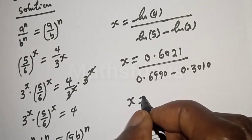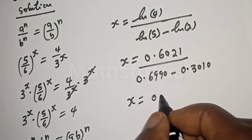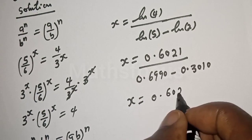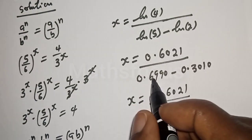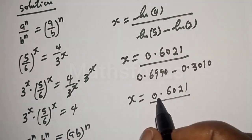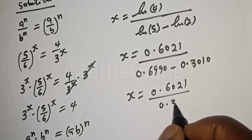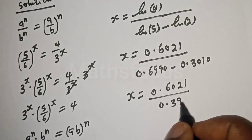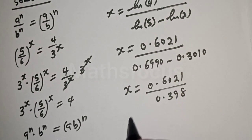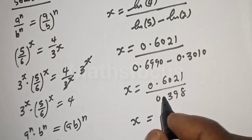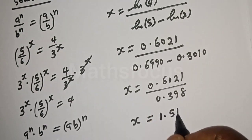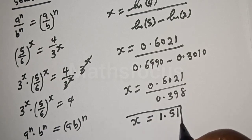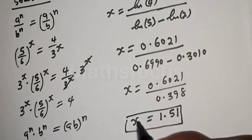So x is equal to 0.6021 over 0.398. Then x is equal to 1.51, and this is the final answer.